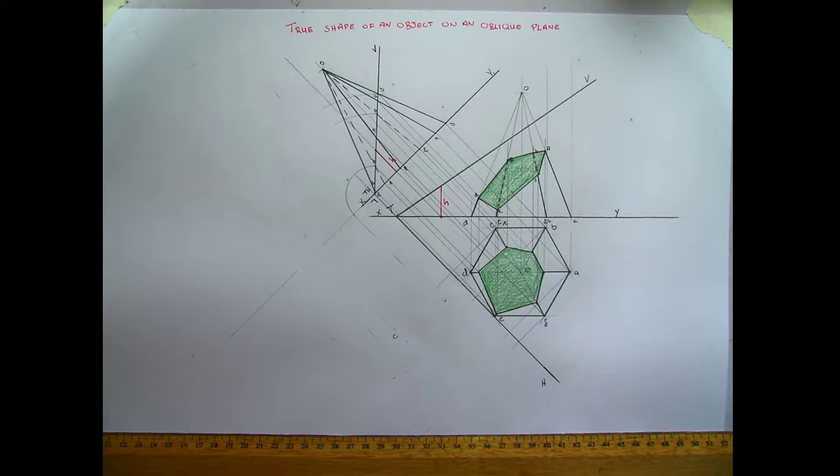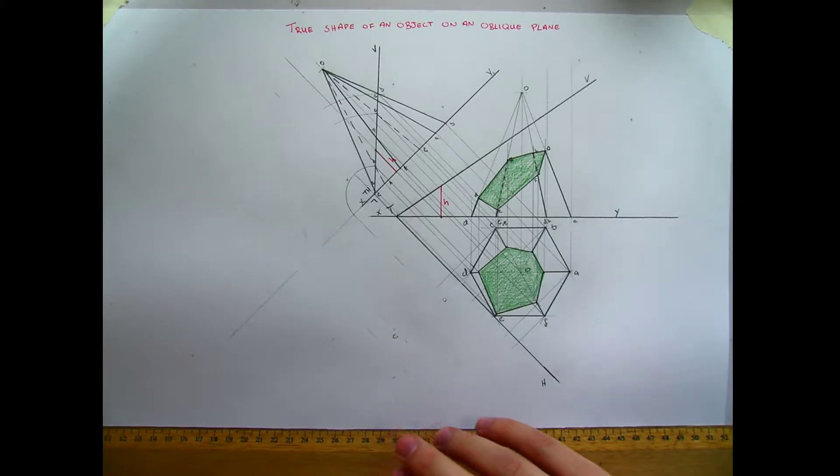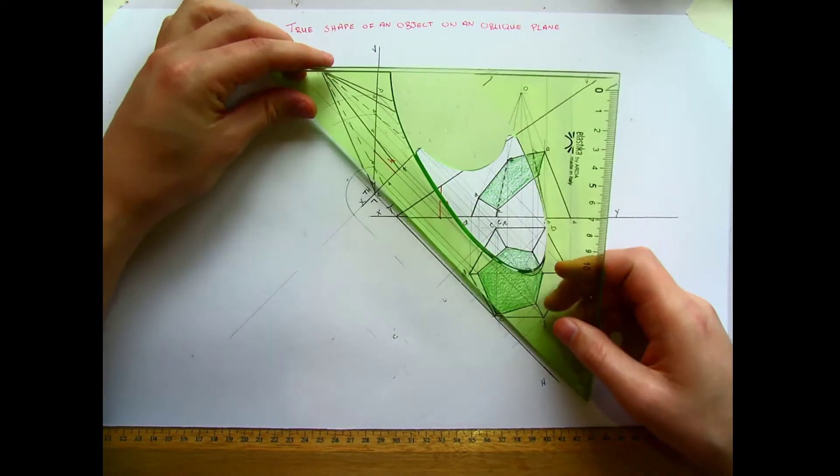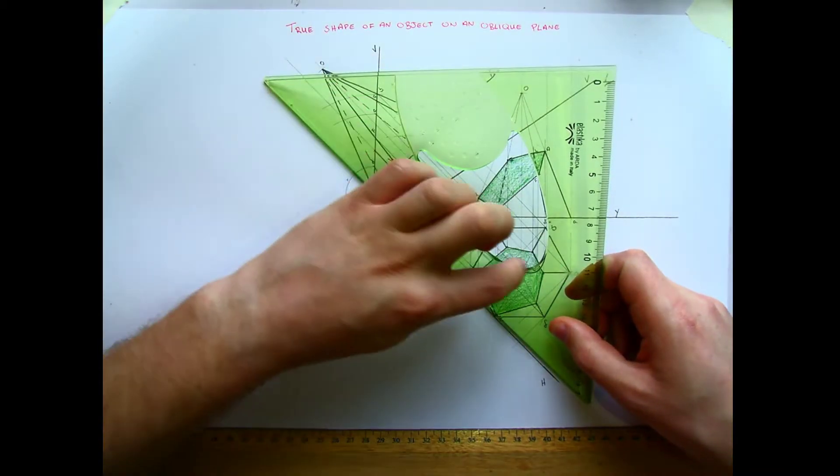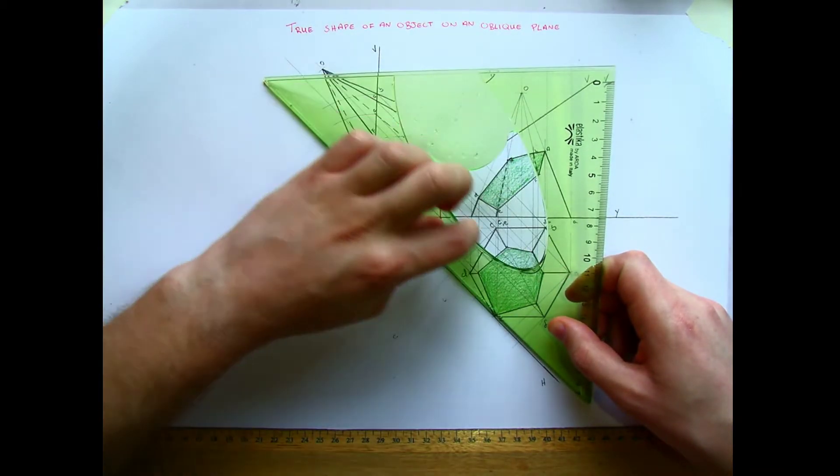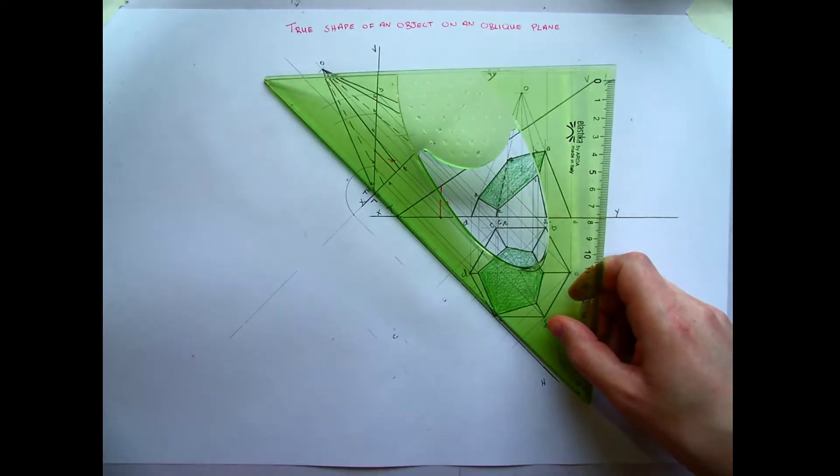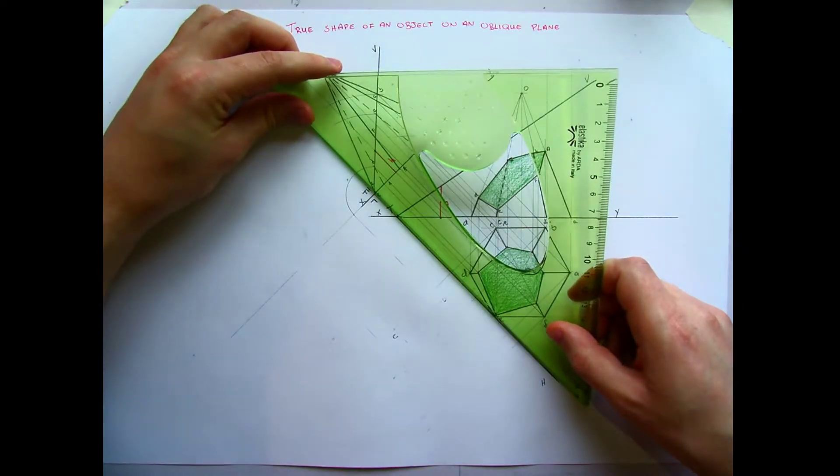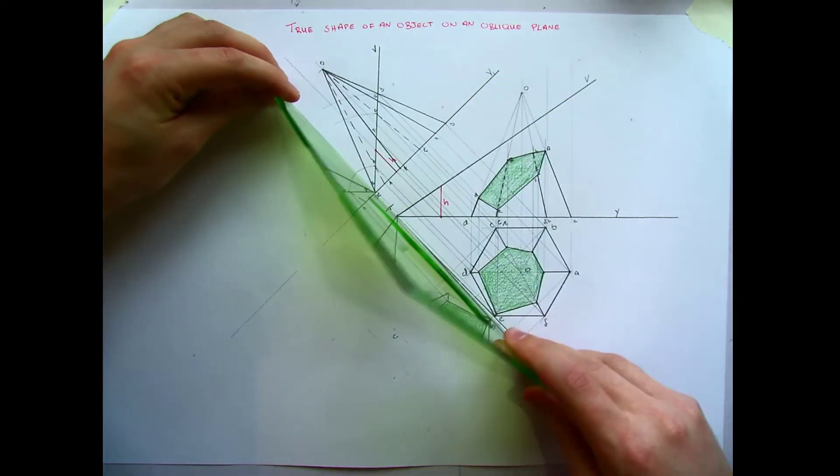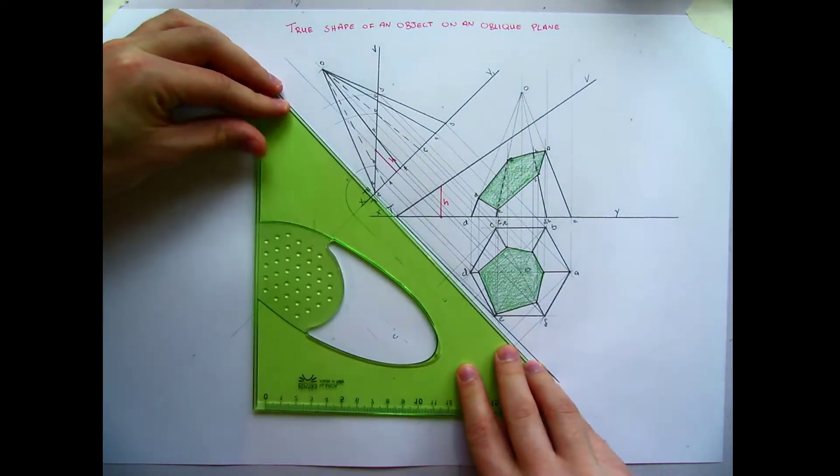So back to the question page, we have a number of things that we're going to do. So just if we start with this, this is my oblique plane, this is the object on the oblique plane that I want to find the true shape of. Basically what we're going to do is we're going to rebat this down, so taking it from this position and rotating that down so that it's now lying flat on the ground.